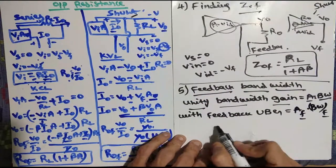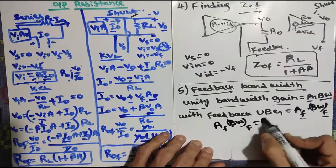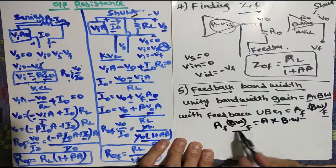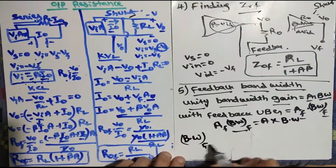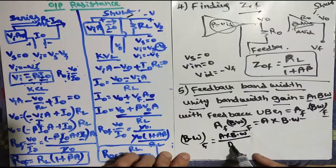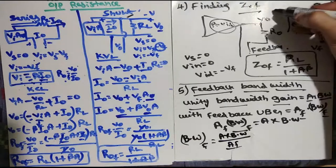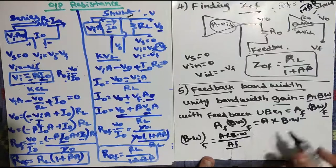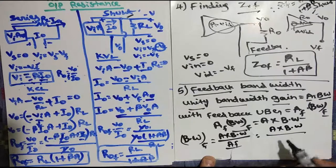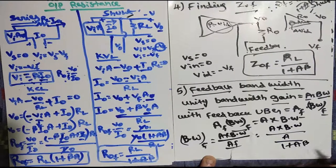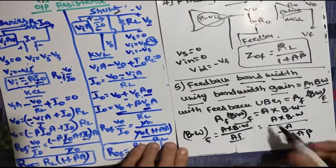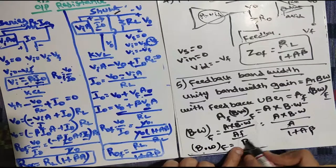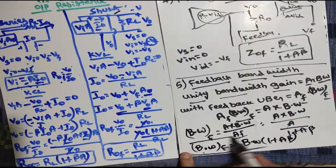Our aim is to find bandwidth with feedback, BWf. So BWf equals A times BW divided by Af. Now applying Af = A divided by (1 plus Aβ), we get: BWf = A × BW divided by [A/(1+Aβ)]. The A terms cancel, giving: bandwidth with feedback = BW × (1 plus Aβ).